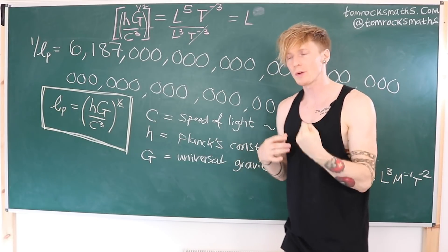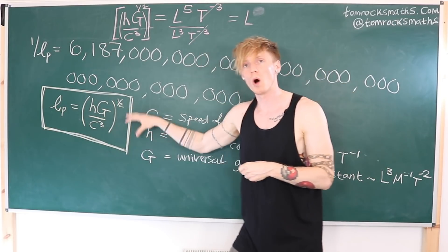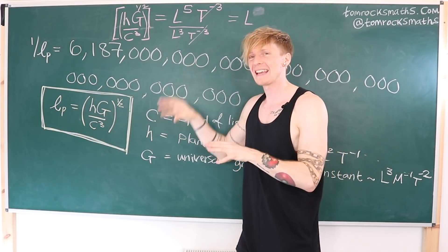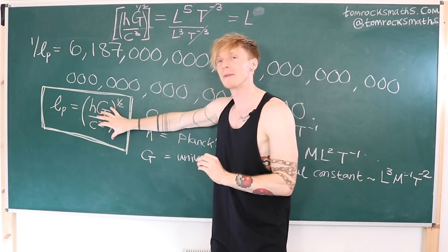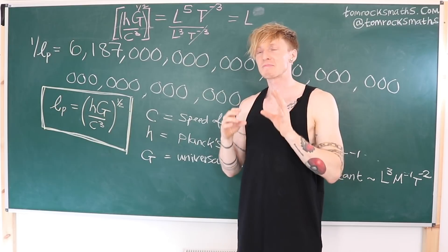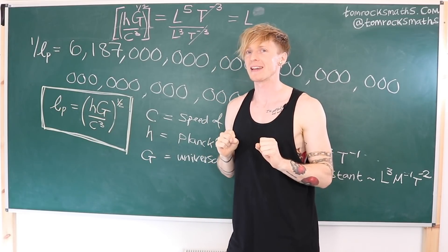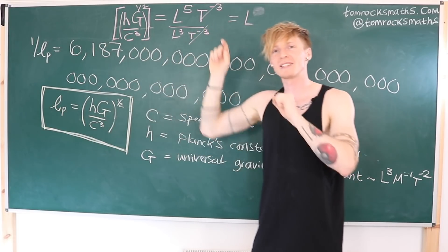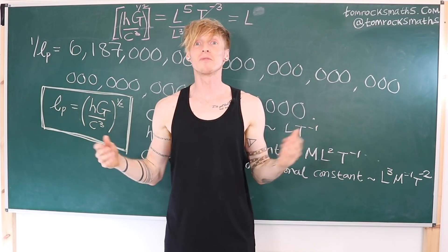So the Planck length is the only way to get a length scale using these three constants. We still don't really know what this number means, or even if it has a meaning. But the fact that it is certainly within the realms of possibility that this number — the Planck length — is the smallest meaningful distance in the universe, is pretty amazing. And this is why one divided by the Planck length, to make it big — one over LP, also known as 6.187 times 10 to the power of 34 — is my hashtag mega fave number.